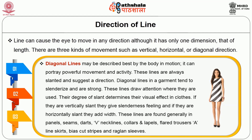Diagonal lines may be described as the best line since they follow the body motion. Diagonal lines portray powerful movement and activity. These lines are always slanted and suggest a direction. Diagonal lines in a garment tend to slenderize the body and are seen to be very strong. These lines draw attention where they are used. Their degree of slant determines their visual effect in clothes. If they are vertically slanted, they give a slenderness feeling, and if they are horizontally slanted, they add width. These lines are found generally in panels, seams, darts, v-necklines, collars and lapels, flat trousers, A-line skirts, bias cut strips and raglan sleeves.